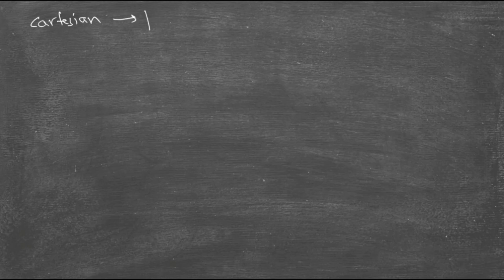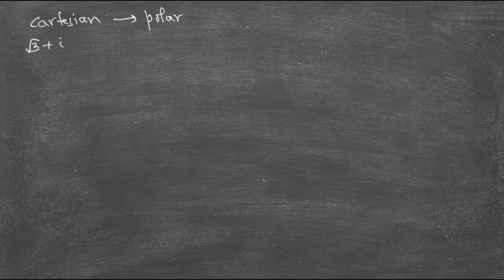Let's do some examples on converting cartesian to polar form and vice versa. Polar to cartesian is straightforward: given r and θ, just plug in the values and write in x + iy form. Let's start with cartesian to polar form. For example, z = √3 + i. The three steps are: find r, find θ, then plug into r(cos θ + i·sin θ).